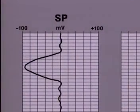We saw in video module GL402 how the SP curve results from naturally occurring electrical currents flowing between the borehole mud and the formation. The movement of ions, which causes SP currents, is possible only in formations with some permeability.